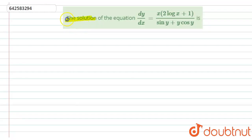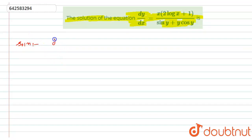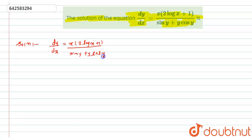Here we have given the solution of the equation dy/dx equals x(2log(x) + 1) divided by (sin(y) + y·cos(y)). Let us start with the solution. The equation is dy/dx equals x in bracket (2log(x) + 1) divided by (sin(y) + y·cos(y)).